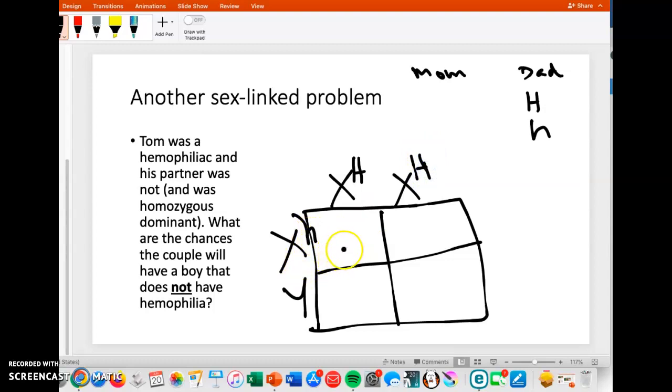What are the chances that the couple will have a boy that does not have hemophilia? So let's just do the boys. The boys would be XY. And this boy here would inherit a big H on his X, and this other possibility would inherit a big H, which would make both the boys normal.